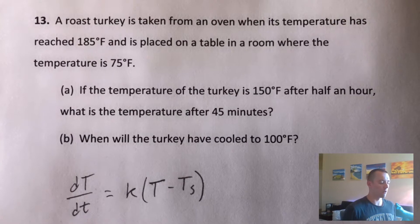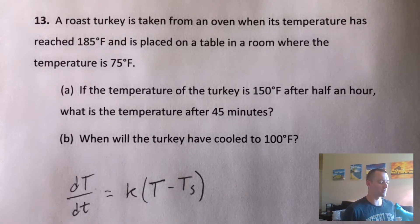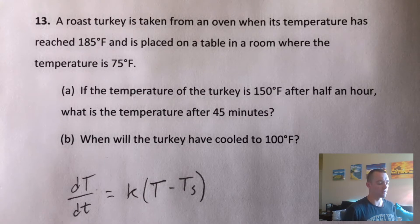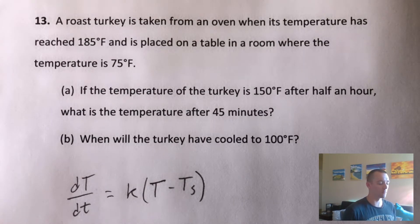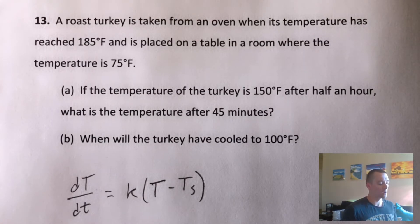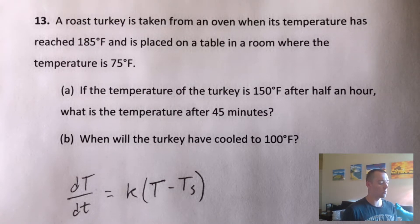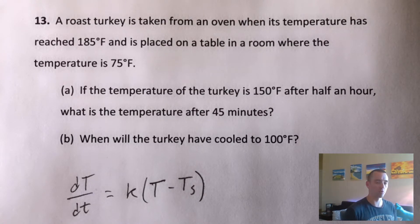So this is the problem that we're going to be doing. A roast turkey is taken from an oven when its temperature has reached 185 degrees and is placed on a table in a room where the temperature is 75 degrees. We have a two-part question here. Part A: if the temperature of the turkey is 150 degrees after half an hour, what is the temperature after 45 minutes? And then part B: when will the turkey have cooled to 100 degrees Fahrenheit?